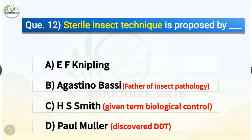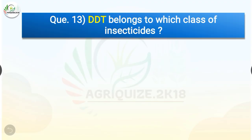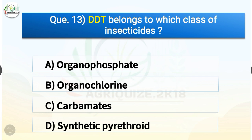Question number twelve: sterile insect technique is proposed by — options are E.F. Knipling, Agostino Bassi, H.S. Smith, or Paul Müller. The correct answer is option A, E.F. Knipling. Agostino Bassi is the father of insect pathology, H.S. Smith gave the term biological control, and Paul Müller discovered DDT.